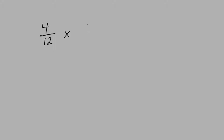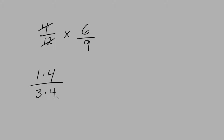Let's try another one. Let's say you had a question like 4 over 12 multiplied by 6 over 9. The 4 can be 1 times 4 and the 12 can be 3 times 4. And 6 over 9 are both divisible by 3, so the 6 can be 2 times 3 and the 9 can be 3 times 3.